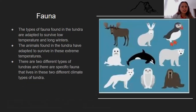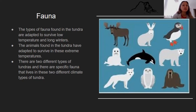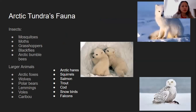Fauna. The types of fauna found in the tundra tend to be adaptive to low temperatures and very long winters. They have large fat storages and tend to hibernate during winter. These animals have to survive strong and extreme weather temperatures. There are two types of tundra regions with different ecosystems and fauna. The first is Arctic tundra fauna, which includes insects like mosquitoes, moths, grasshoppers, black flies, and Arctic bumblebees.